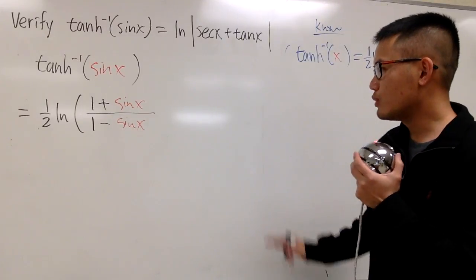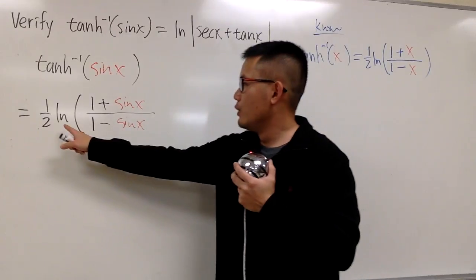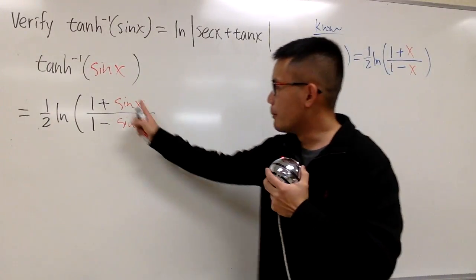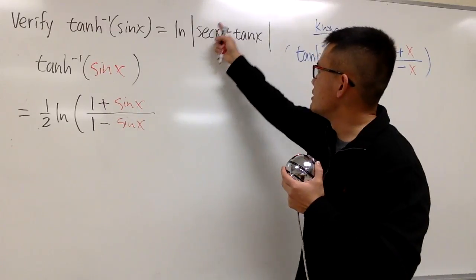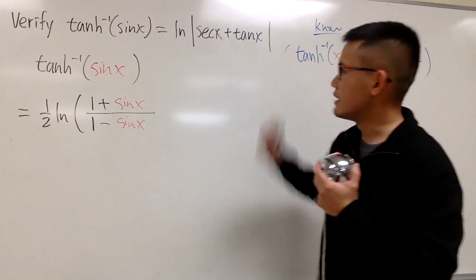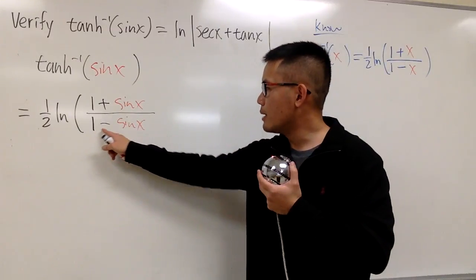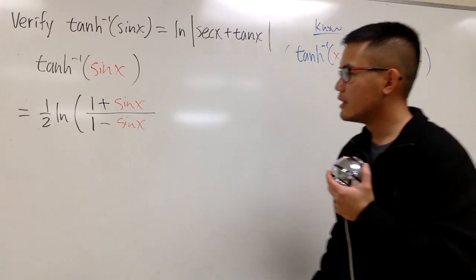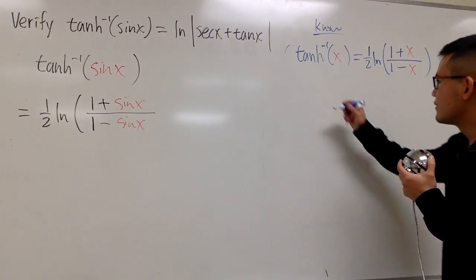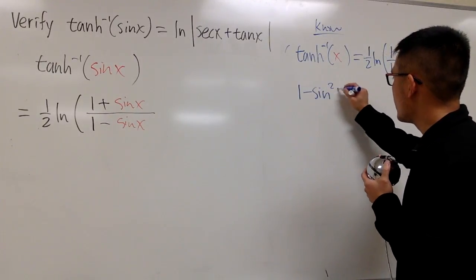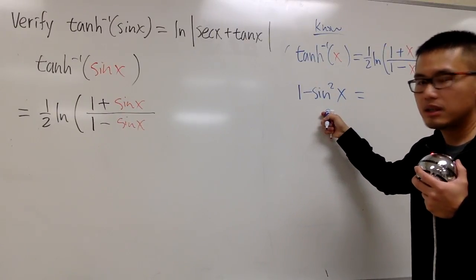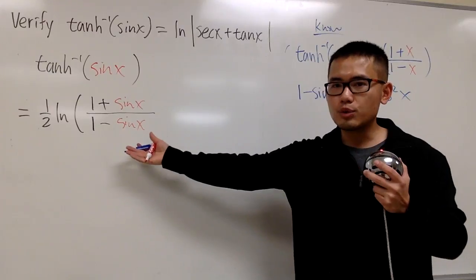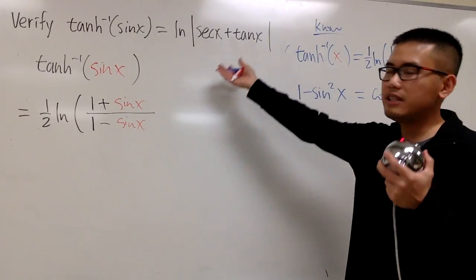I'm not going to close the parentheses yet because I want to analyze what we have. We now have an ln function, which matches the right-hand side — we're making progress. Looking at the denominator, 1 minus sin x alone doesn't have a familiar identity, but 1 minus sin squared x equals cosine squared x. If I can produce cosine squared x in the denominator, we can get secant x and tangent x from there.